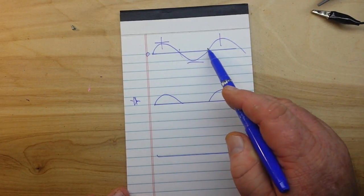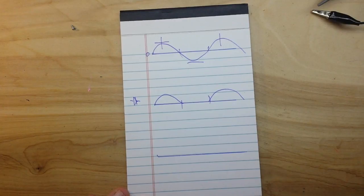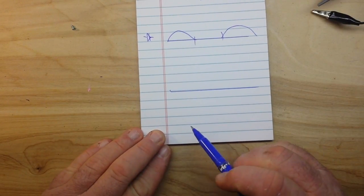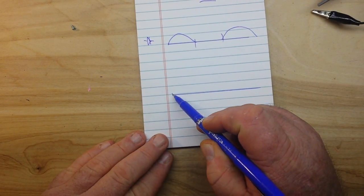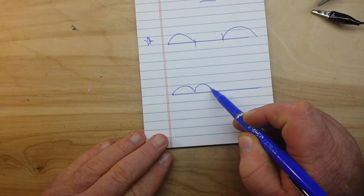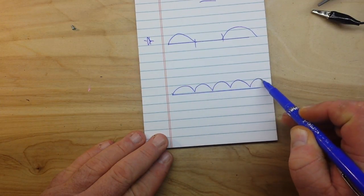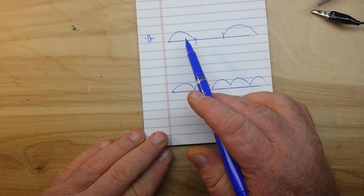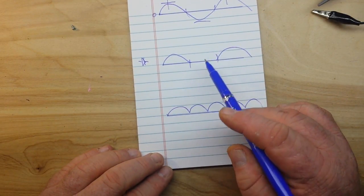And then if we go with full wave rectification, it looks like this. It's double the frequency of both the sine wave and the halfway rectification because this portion has been spun around to be back up here.